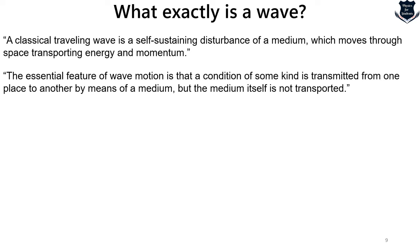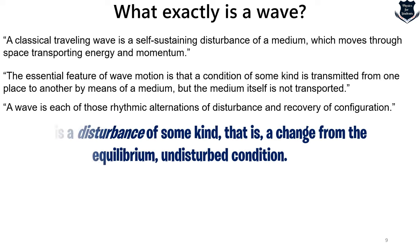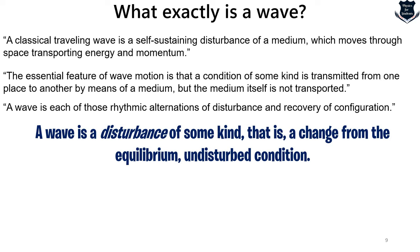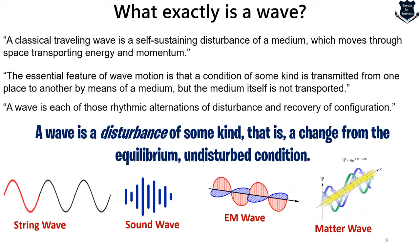Another definition: the essential feature of wave motion is that a condition of some kind is transmitted from one place to another by means of a medium. The most common defining characteristic is that a wave is a disturbance — a change from the equilibrium, that is, an undisturbed state. A string wave disturbs the position of the string's segments. A sound wave disturbs the ambient pressure. An electromagnetic wave disturbs the strength of the electric and magnetic fields. Matter waves disturb the probability that a particle exists in the vicinity. Together, a wave is a disturbance that changes a condition from undisturbed to disturbed.